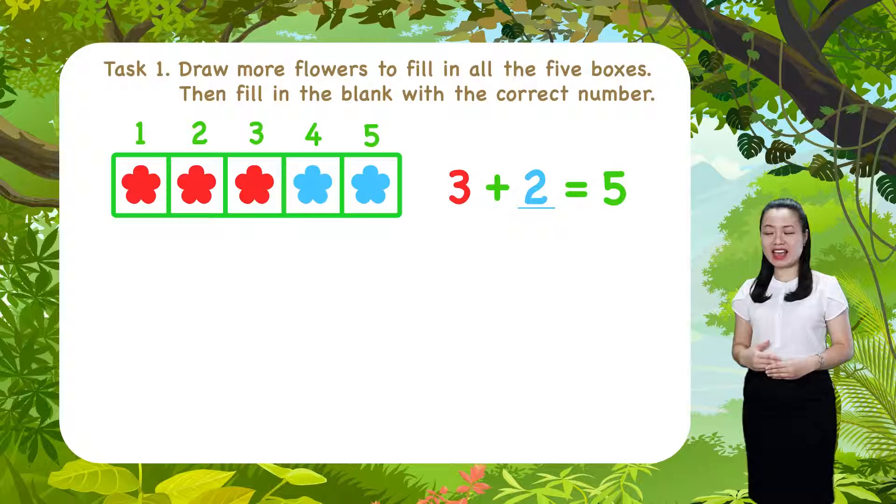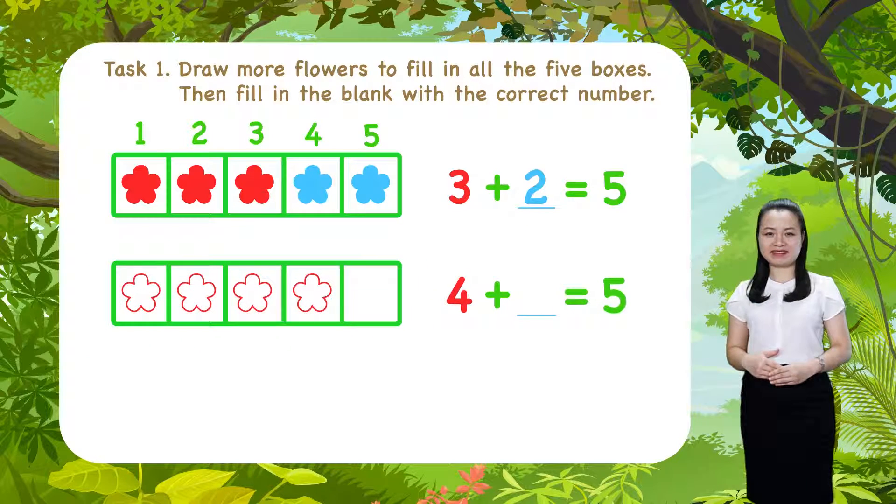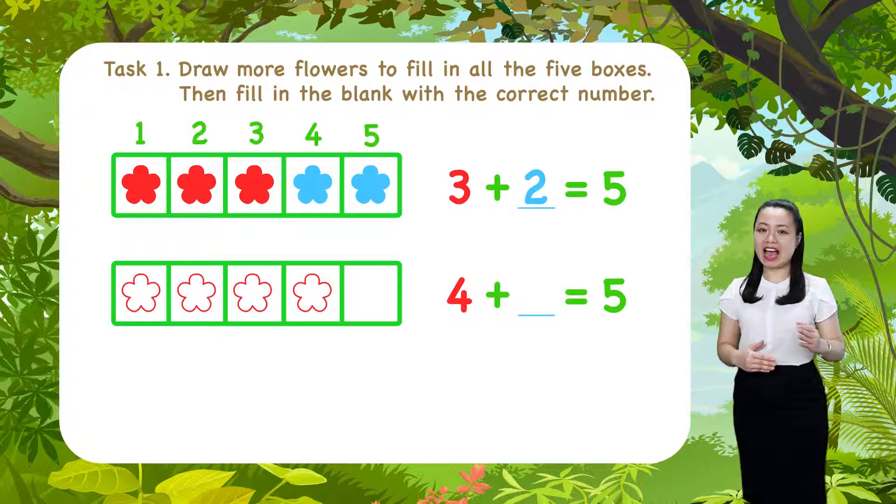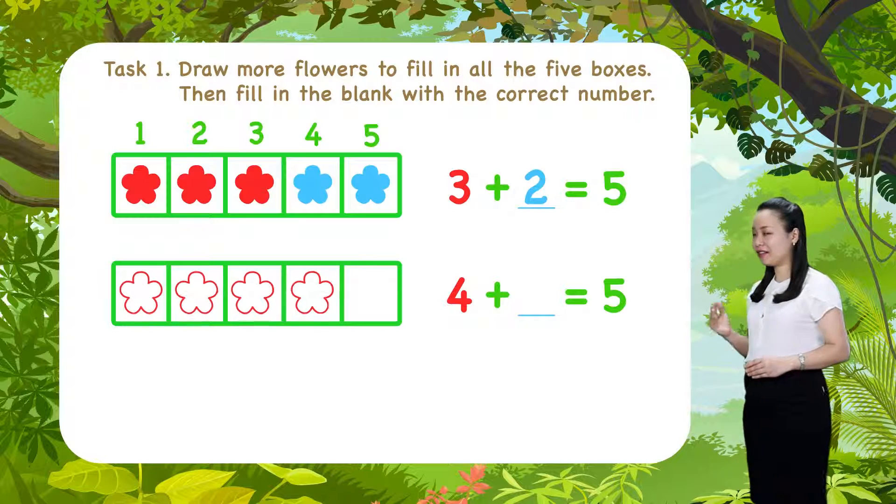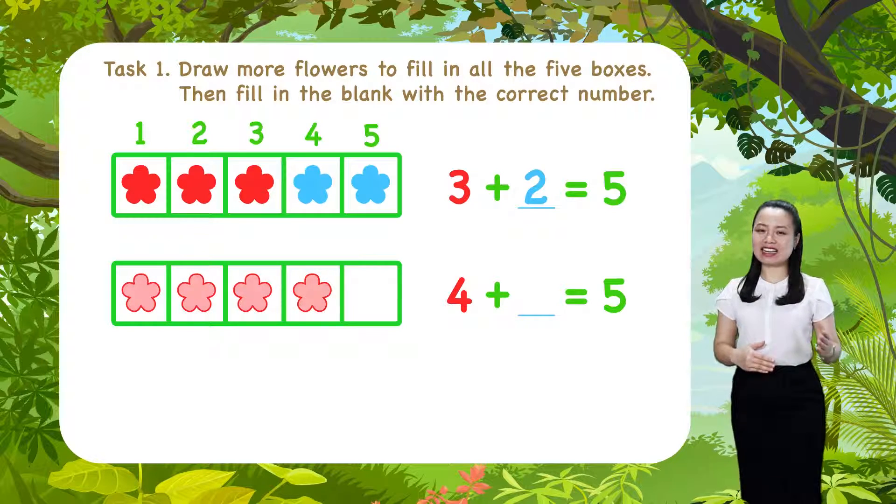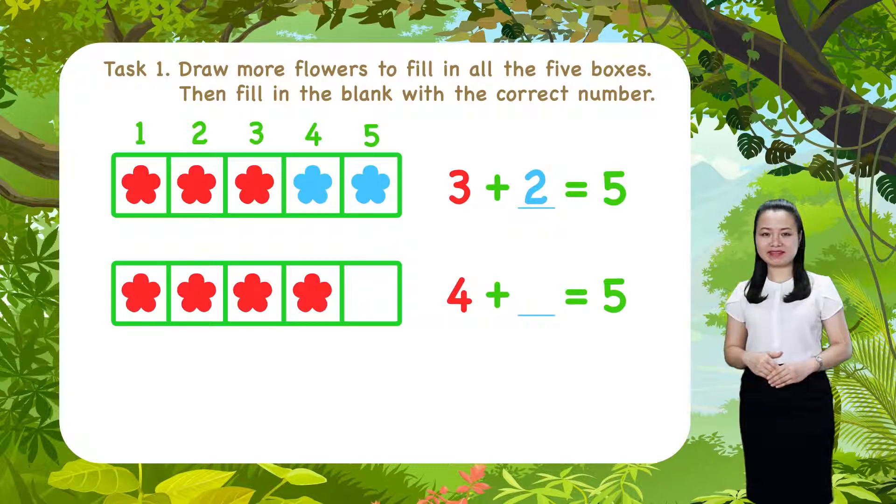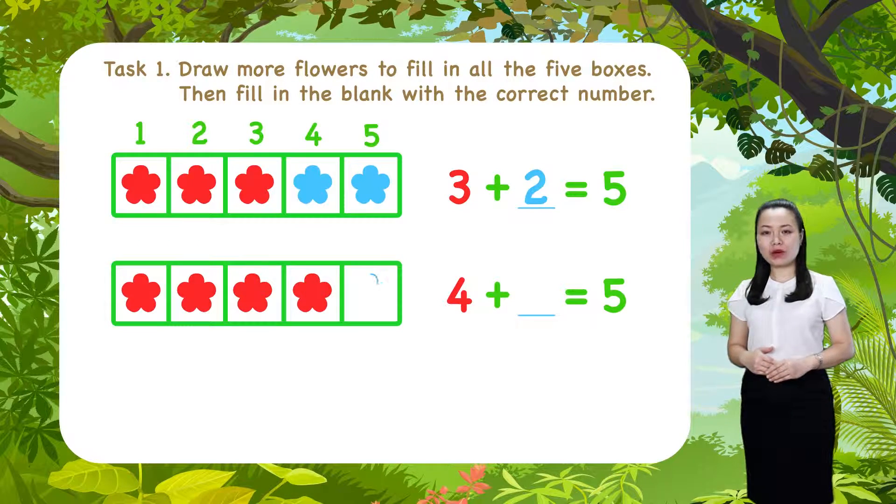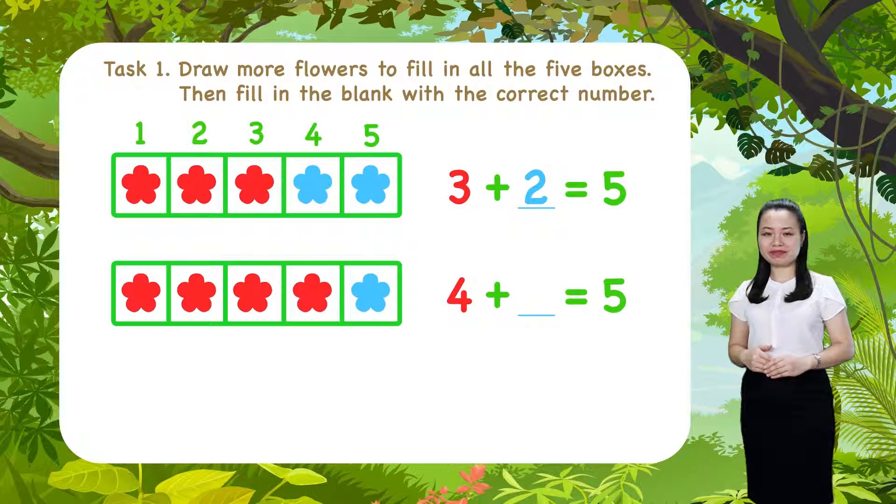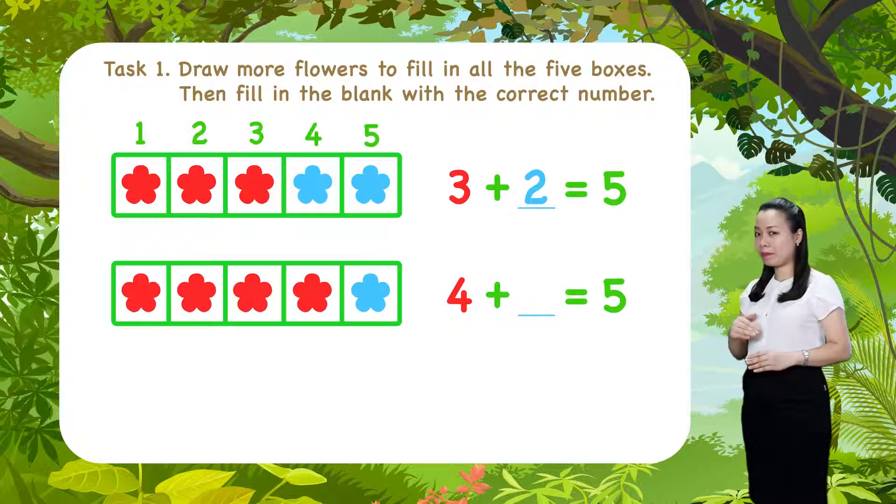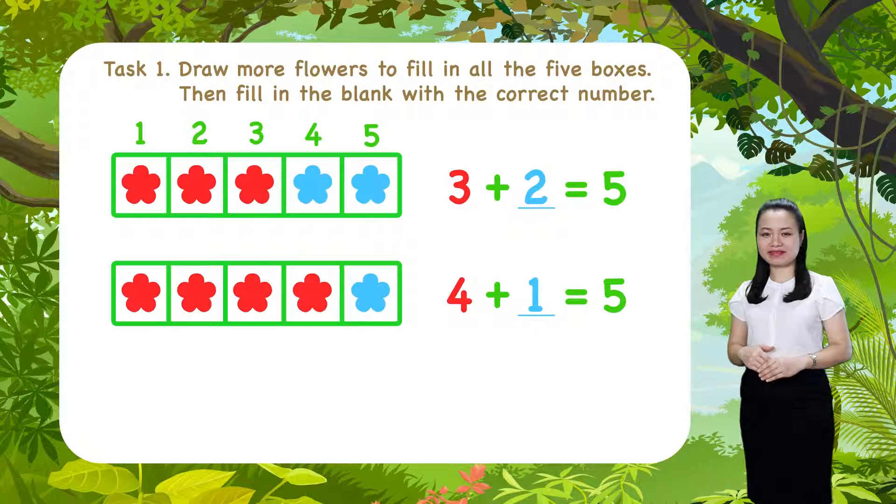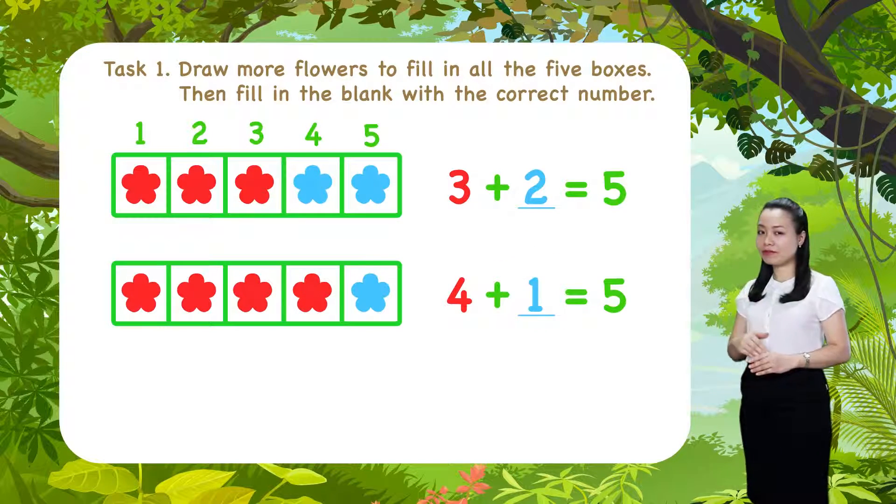Next, the fourth row. Here, we have four flowers. Let's color them red. One box is still empty. Let's show one more flower. Color it blue. And you'll see, four plus one equals five.